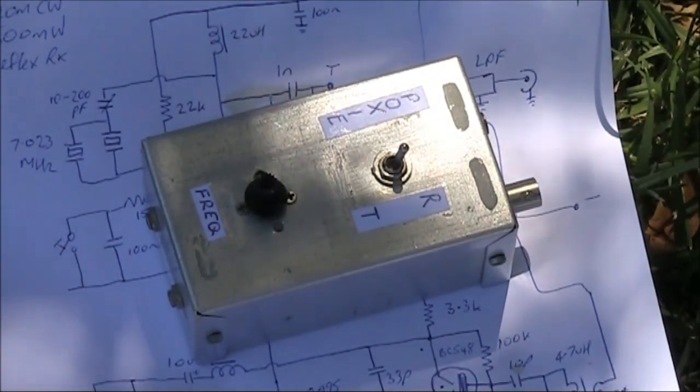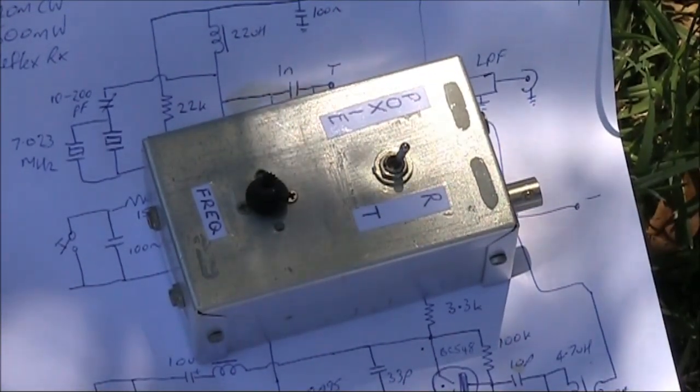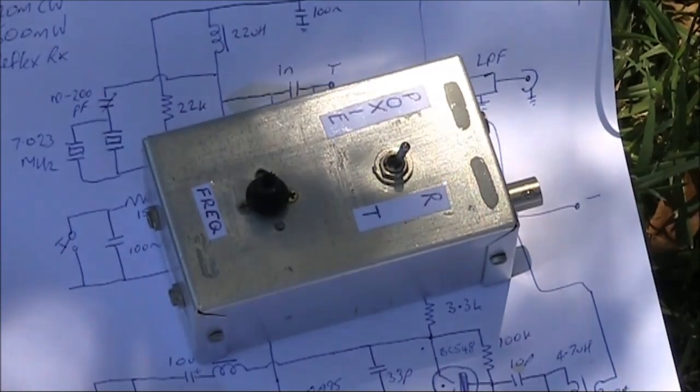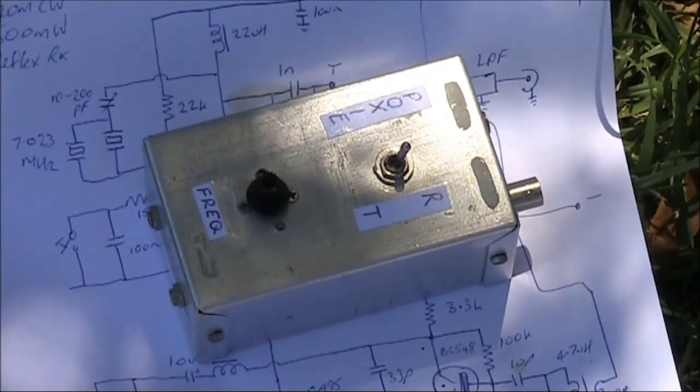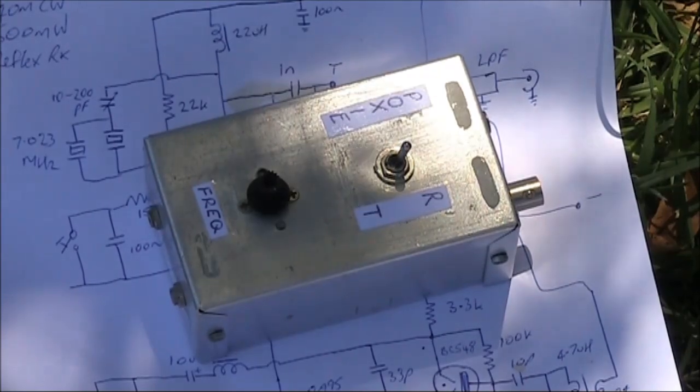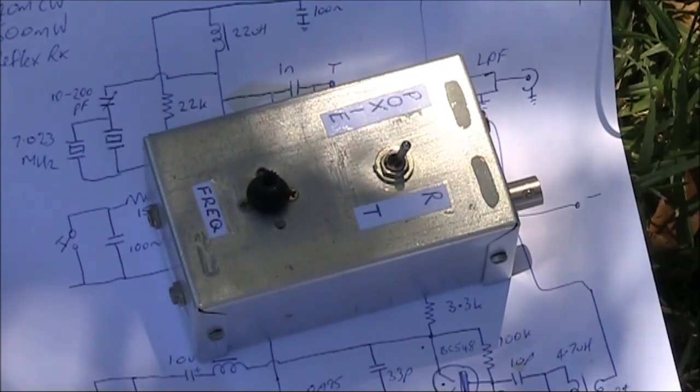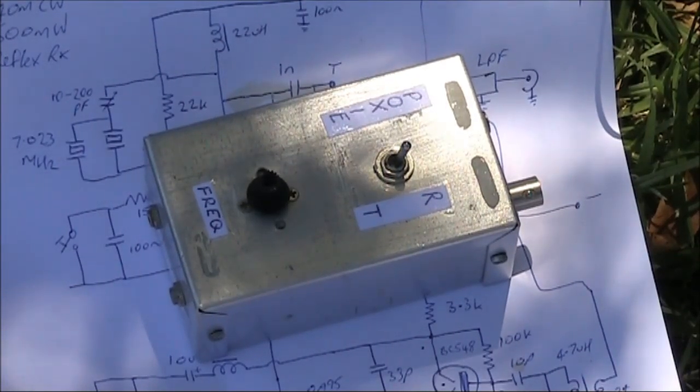It's basically a combination of what I've described in two previous videos. A very simple one transistor 7MHz CW transmitter, similar to the one that I built on a chopping board.